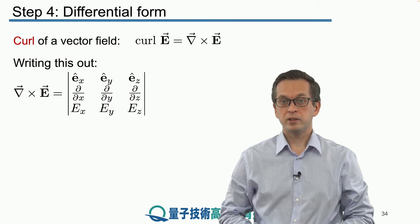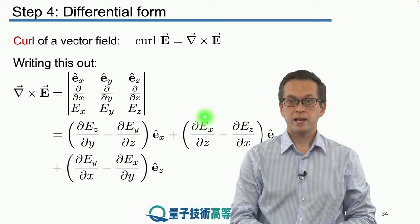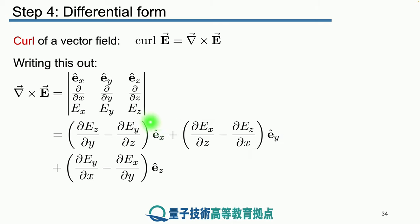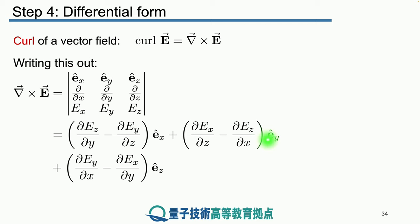The determinant is computed as follows: the component of the curl along the x direction is given by the determinant of the corresponding 2×2 submatrix, which gives d(Ez)/dy minus d(Ey)/dz. The y component is given by d(Ex)/dz minus d(Ez)/dx. And the final component along the z direction is given by the remaining expression.